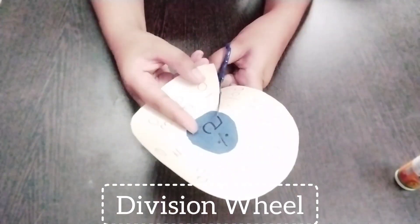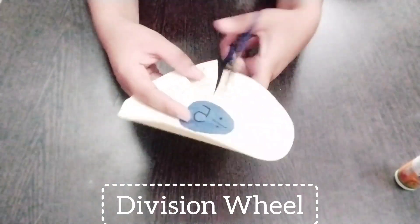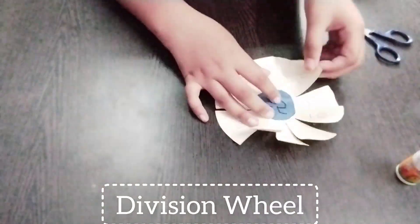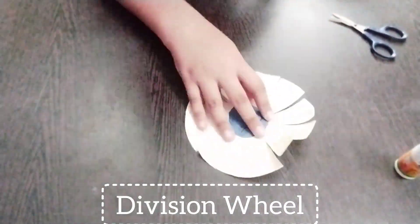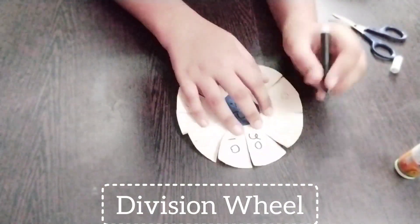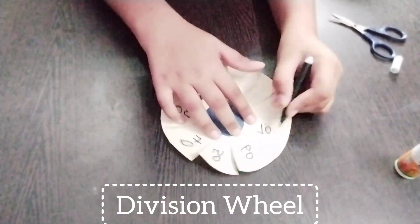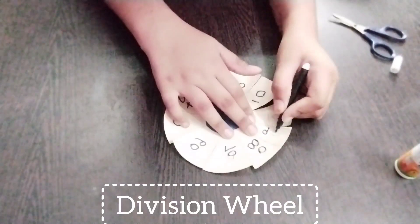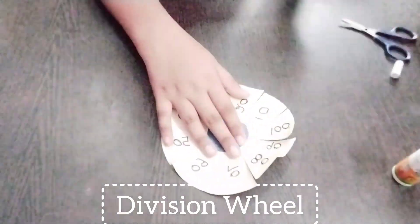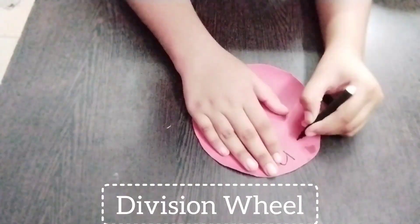Divide into ten parts and cut small slits. Write 10, 20, 30, 40, 50, 60, 70, 80, 90, 100 in each section.